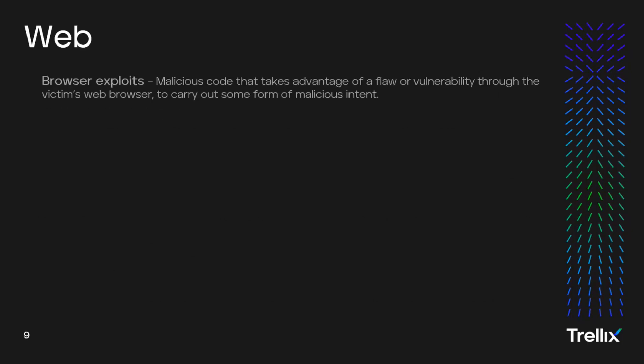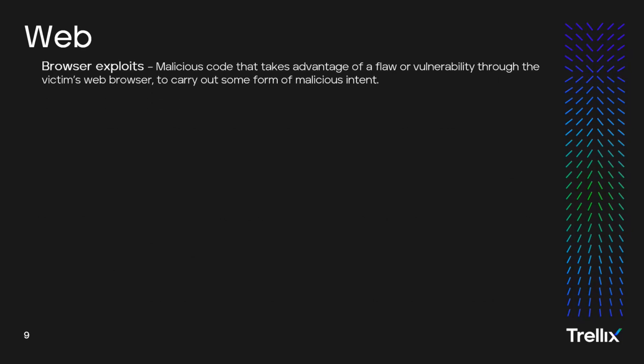Moving right along, let's look at web. The first one we're going to look at for web is browser exploits. Browser exploits are malicious code that takes advantage of a flaw or vulnerability through the victim's web browser to carry out some form of malicious intent. Some examples of browser exploits include Google Chrome, Microsoft Edge zero days, drive-by downloads, exploit kits, iFrame injections, and man-in-the-middle attacks.